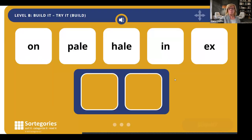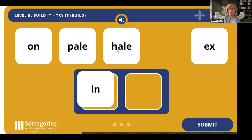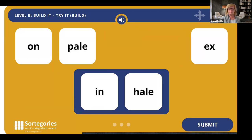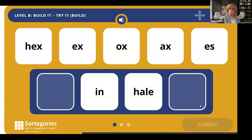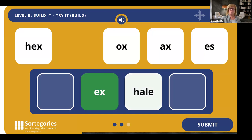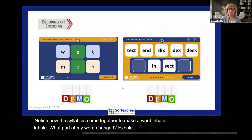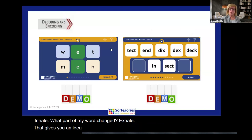Build 'inhale.' So I can build my word. Inhale. Hit submit. In. Hale. Inhale. Notice how the syllables come together to make a word. Inhale. Change 'inhale' to 'exhale.' Inhale. What part of my word changed? Exhale. Exhale. That gives you an idea of how that particular activity grows up from level A to level B. We're going to pause here for questions if there are any.